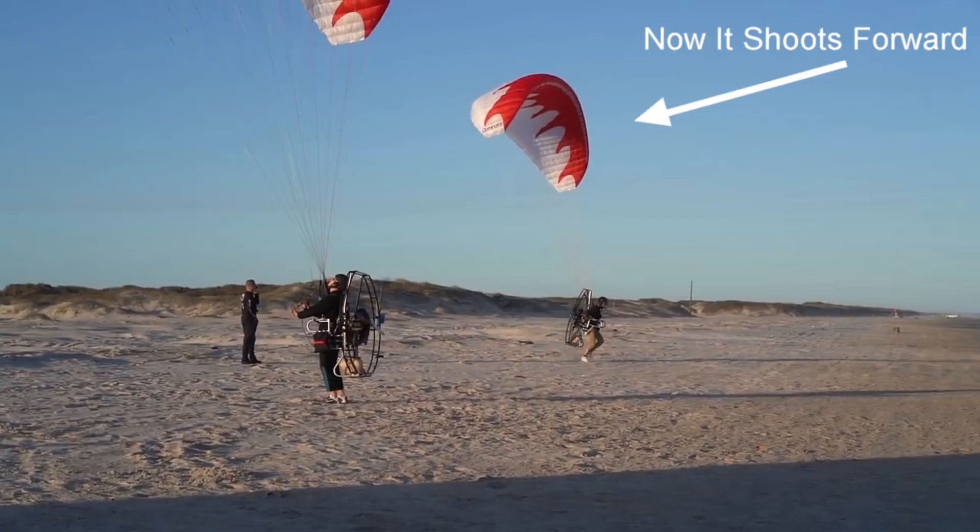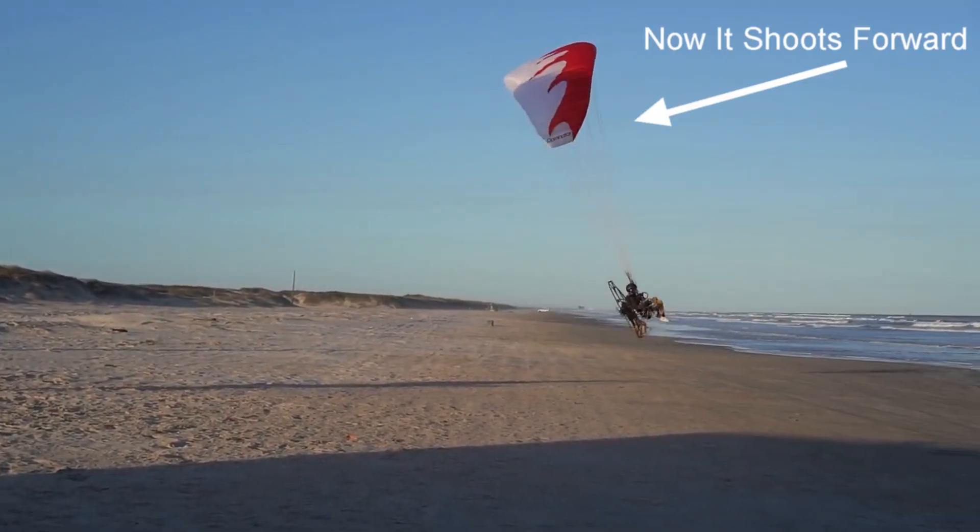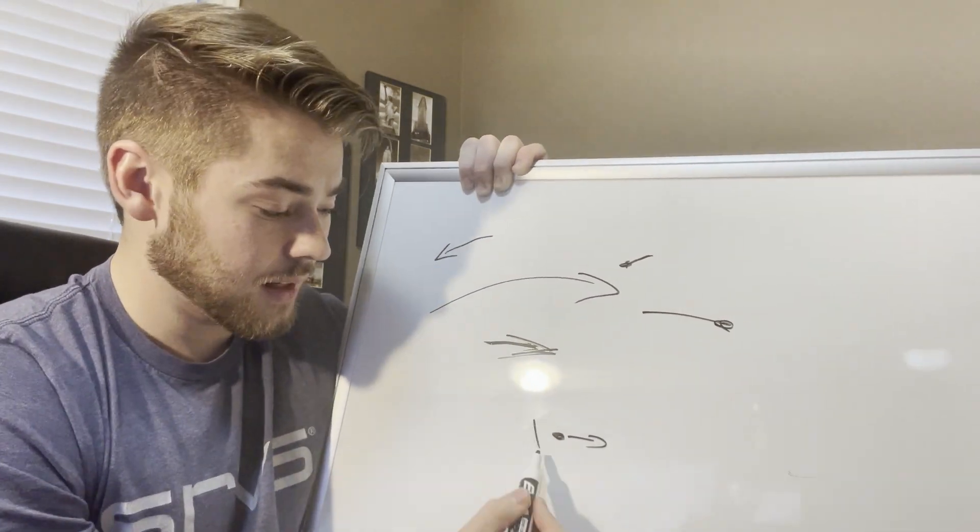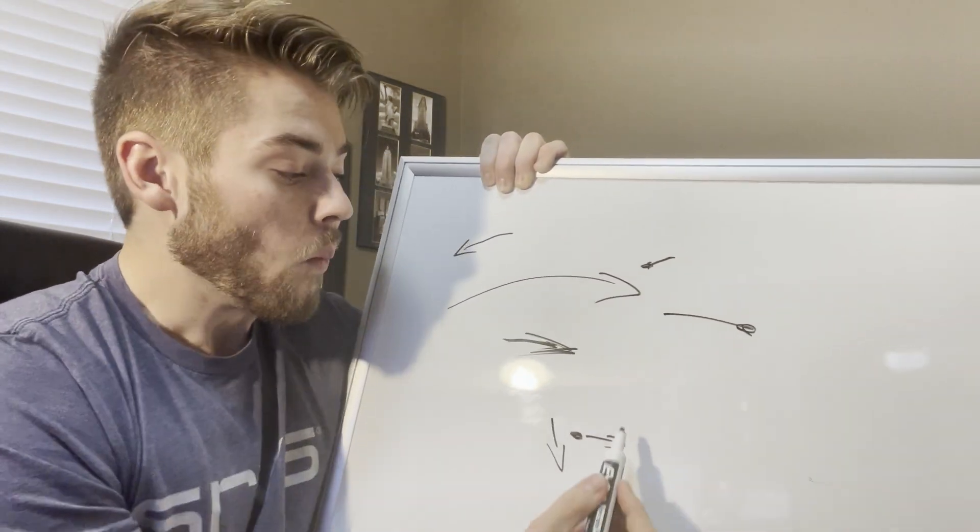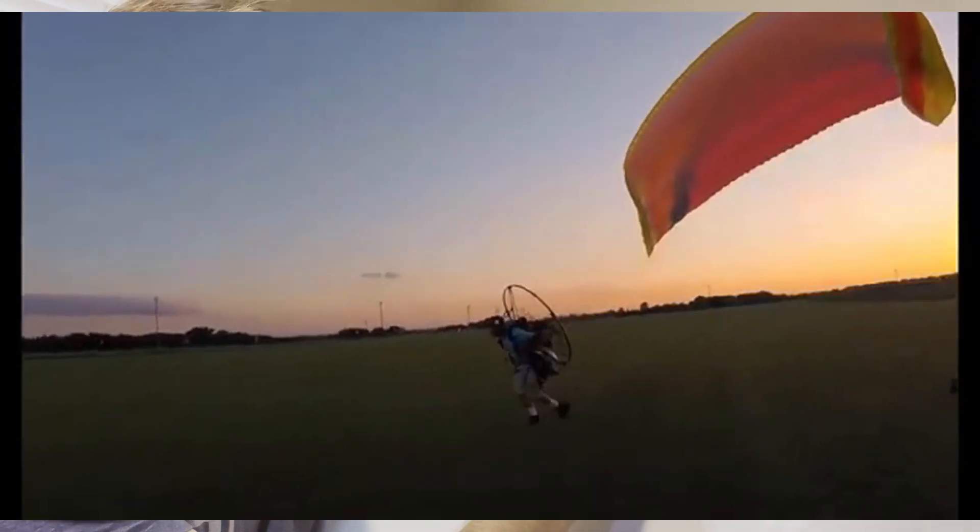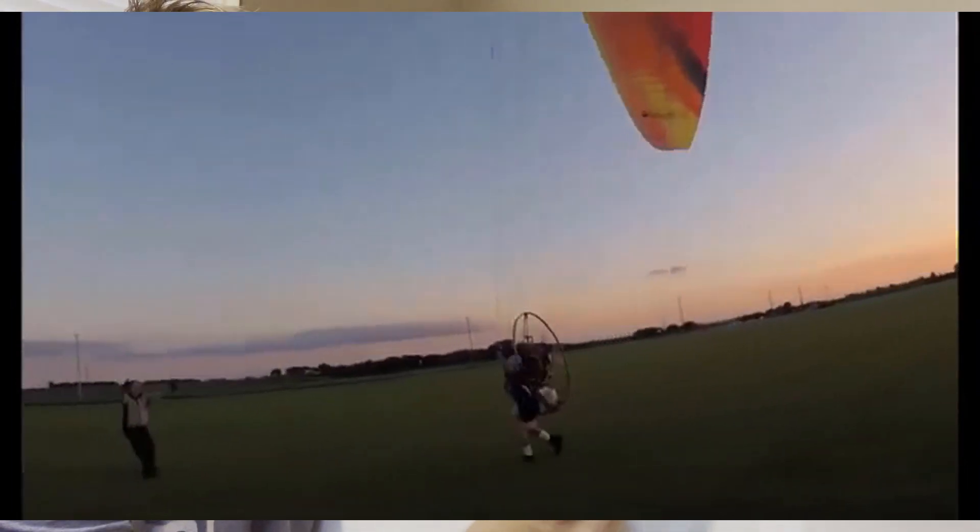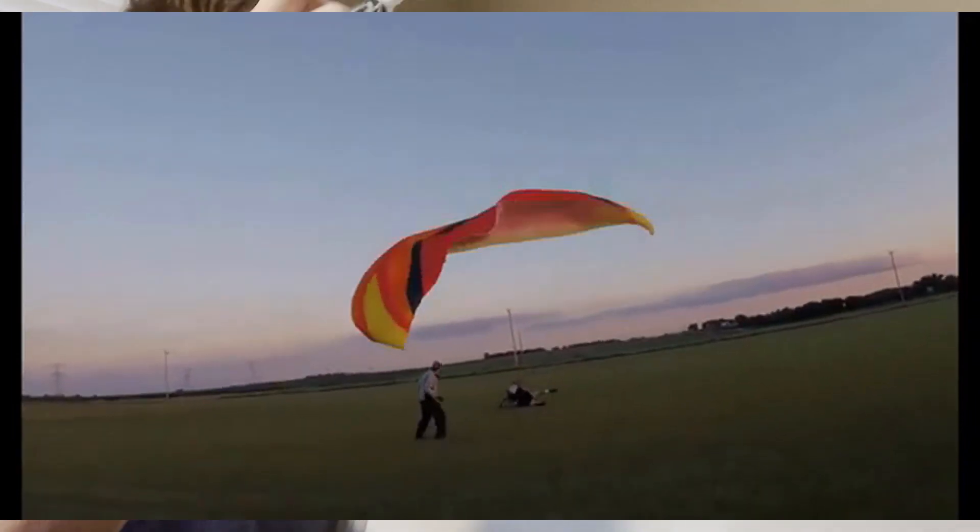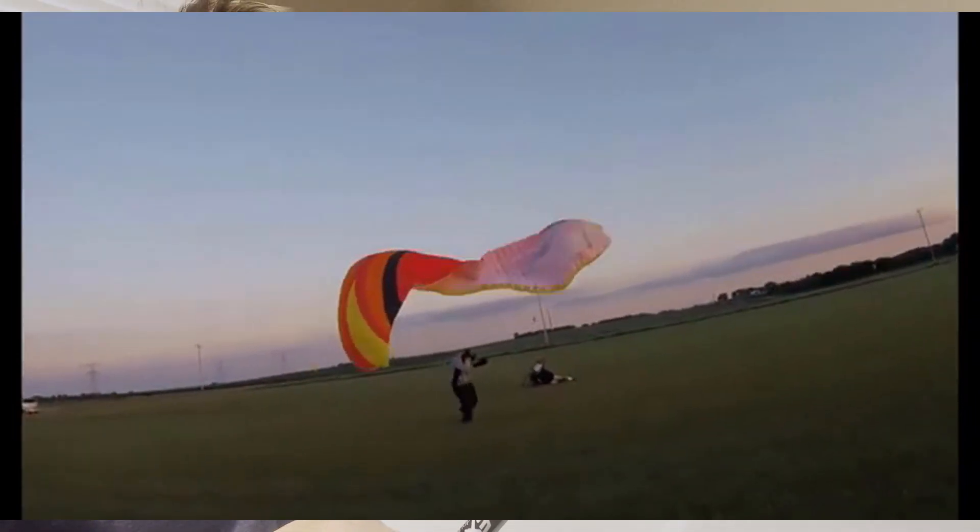Then it shoots forward like this. If the pilot is only running forward and does nothing with his brakes, the glider could shoot forward and collapse onto the pilot. This right here, when it collapses, is how you break equipment. It's how you break gliders. It's how you spend a lot of money on repairs.